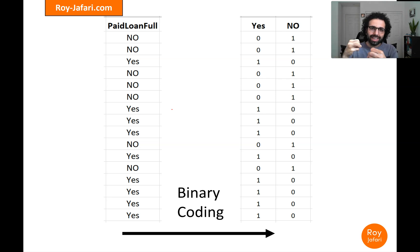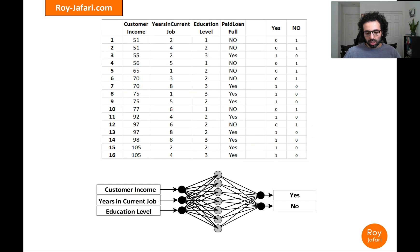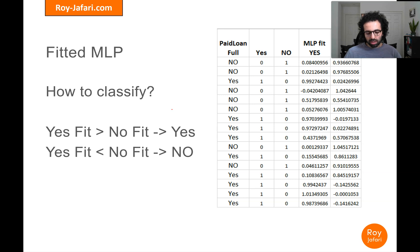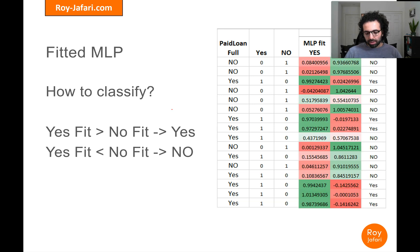We are forcing MLP to keep this relationship between the two binary codes. So instead of having one target we are going to have two targets that have a specific relationship with one another. Once we run this, the outputs will be numbers between zero and one — and sometimes outside that range — and classification becomes very simple: if the 'yes' fit from MLP is larger than the 'no' fit, we classify it as 'yes', and so on. We can also use color coding, and we have preserved the correct relationship.